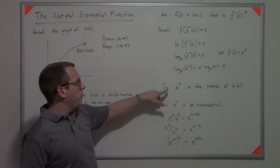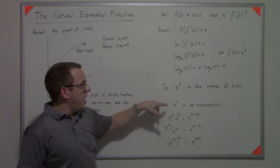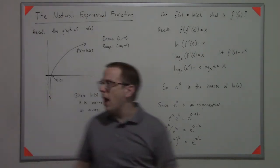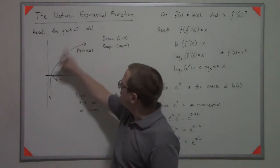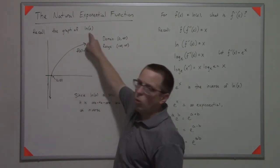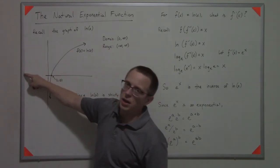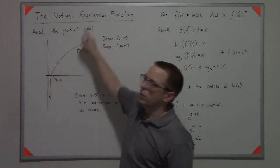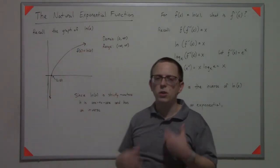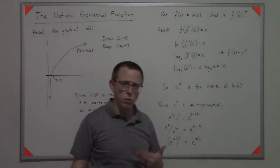But anyway, you have this e to the x. It's an inverse. So if I were to graph it, instead of looking like this, you could take that y equals x line and flip it over. So it's actually going to ride the line here and then go off into positive infinity. And there's plenty of graphs out there for e to the x if you want to look it up.